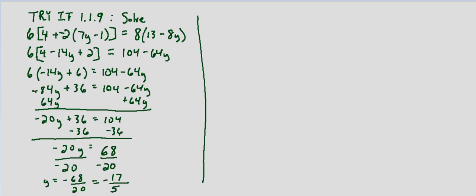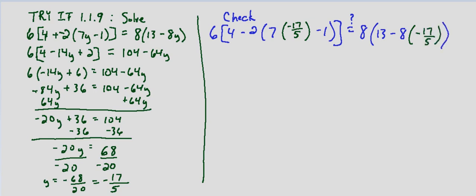This one is going to get a little bit complicated because we're dealing with a fraction here. But the process is essentially the same. We simply substitute into our original equation what we found. So our check: 6 times 4 minus 2 times 7 times negative 17 fifths minus 1. And does that equal 8 times 13 minus 8 times our negative 17 fifths again.